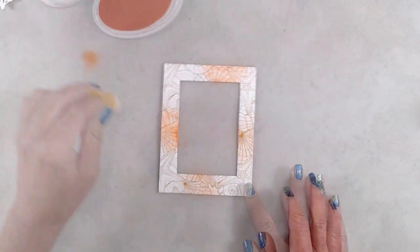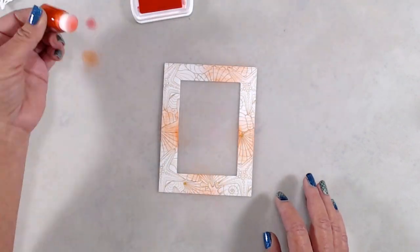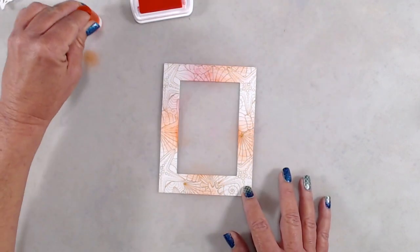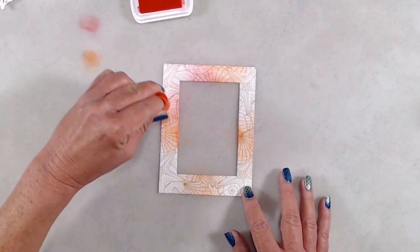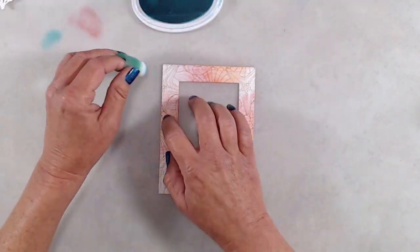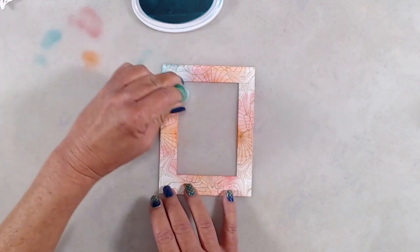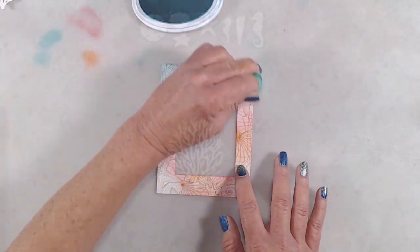Once I had run that through my Gemini Junior, I decided to add a little bit of color on the frame, so I used mini fingertip blending brushes and a peach ink, a coral ink, and the same blue ink as I did for my background panel, and just did some random ink blending around that frame.